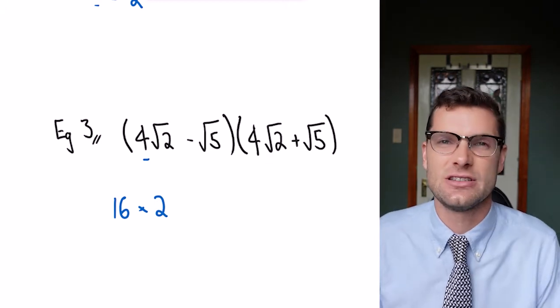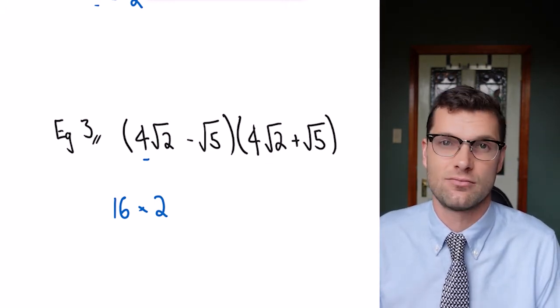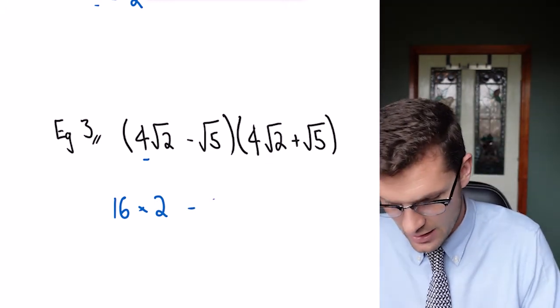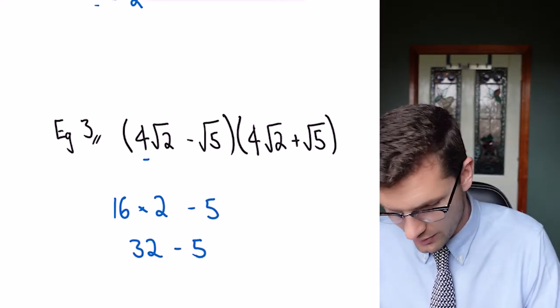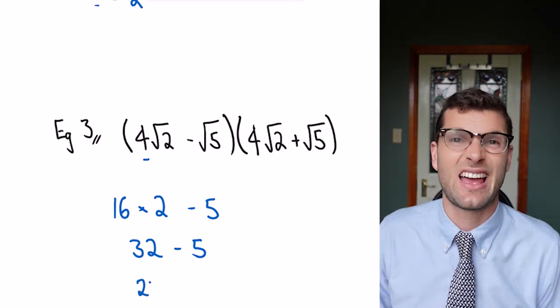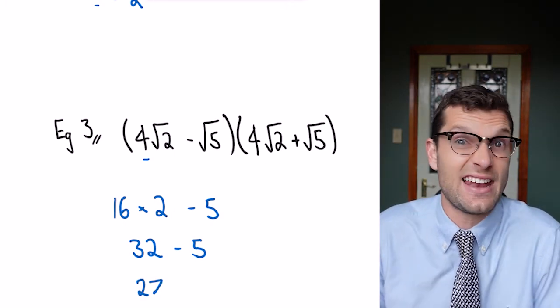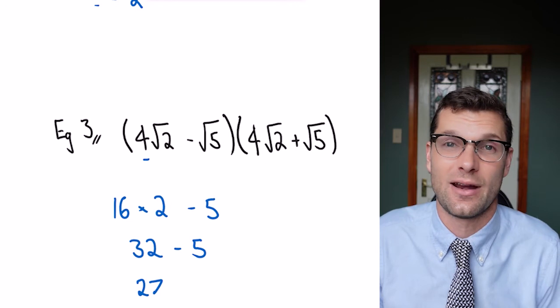Then that second term is just dealt with normally, which is minus 5. 16 times 2 is 32, then minus 5, and so my final answer is 27. Again, to check this you can type it into your calculator and get the correct answer.